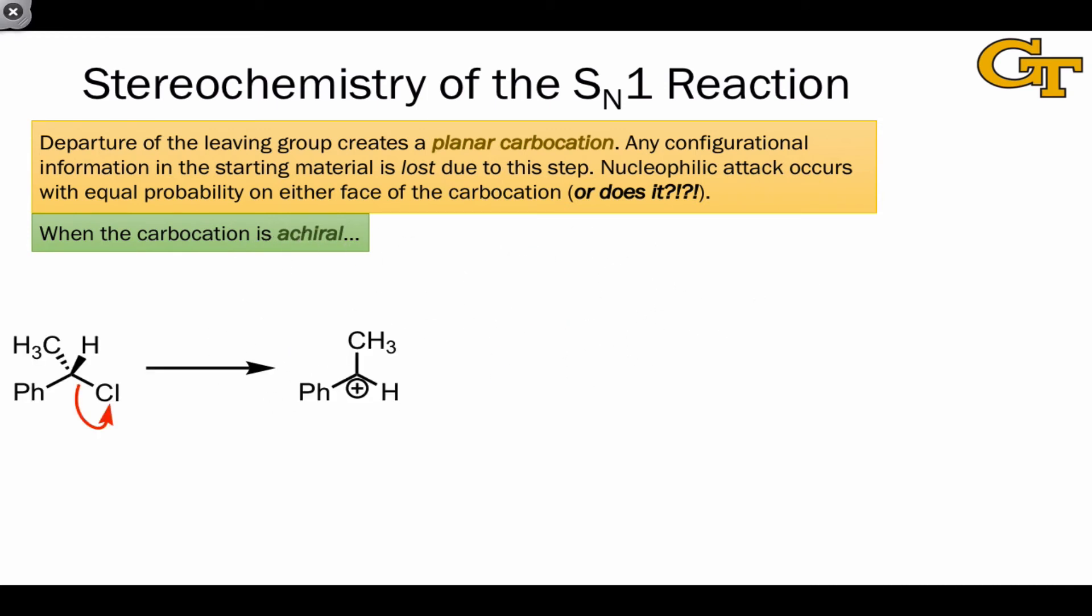Notice what happens in this example. After the departure of chloride, we end up with a planar achiral carbocationic intermediate.